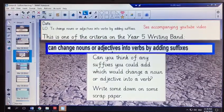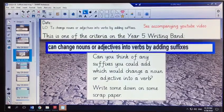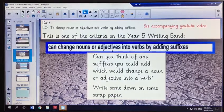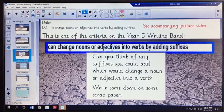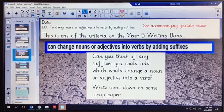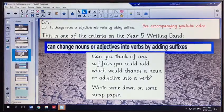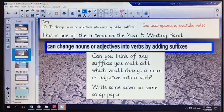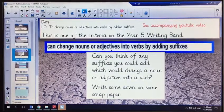So today as I've already mentioned we're going to be changing nouns or adjectives into verbs by adding suffixes, and this is one of the criteria on the Year 5 writing band. So first of all I'd just like you to take a moment to think of any suffixes you could add which would change a noun or adjective into a verb.